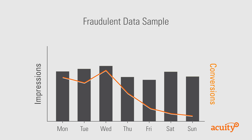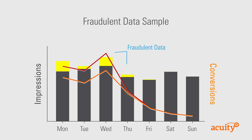Right now, the greatest impact we see is from fraud committed against the buy side. Part of the problem is the metrics that we use to measure campaigns. We see impressions that are billed but no user ever sees the banner, we see clicks that are automated, and we even see scams that hijack CPA credits.